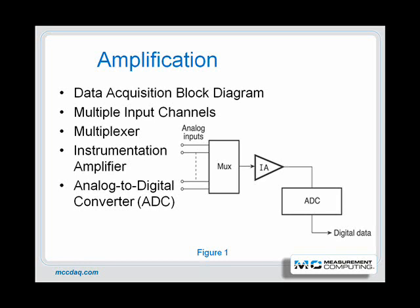A simple data acquisition system contains a switching network or a multiplexer and an analog-to-digital converter. The instrumentation amplifier that we will be discussing sits between the multiplexer and the ADC. Each of these individual circuit blocks has unique capabilities and limitations, which define the performance of the system.